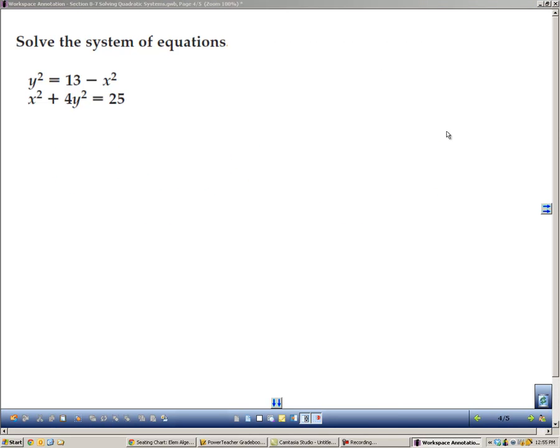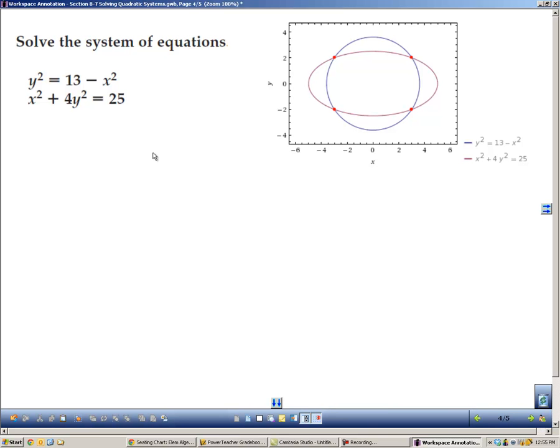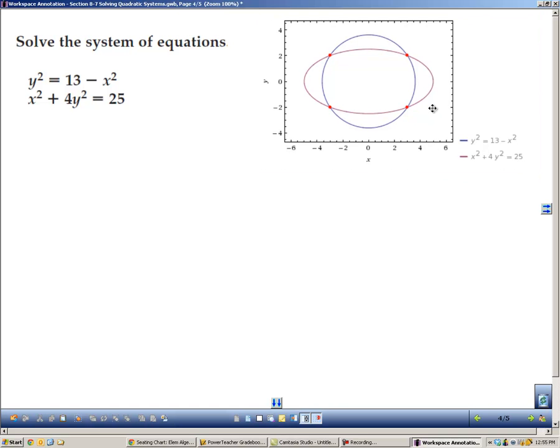Here we have another system to solve. Both of these have x squareds and y squareds. So we know that these are both conic sections. We find that these two equations are an ellipse and a circle. And they intersect in four places. You can see them here on this picture. So we know we're looking for four solutions.